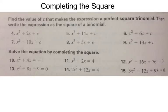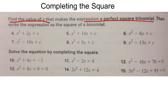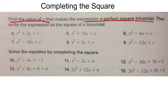Hi, this is Mr. Eurego, and today I'm going to show you how to complete the square. My directions are: find the value of C that makes the expression a perfect square trinomial, then write the expression as the square of a binomial.